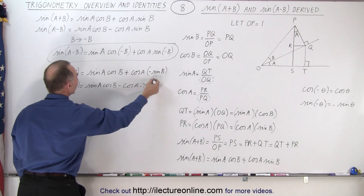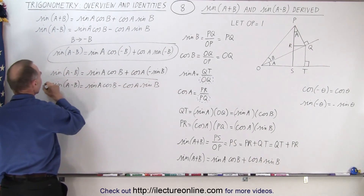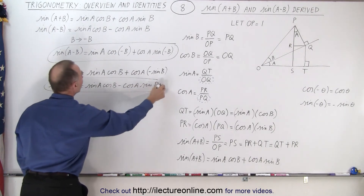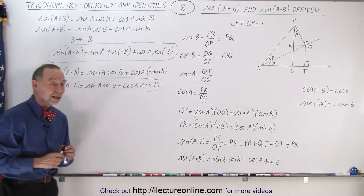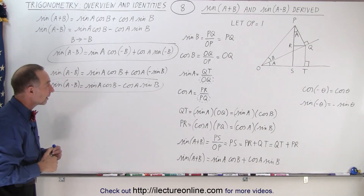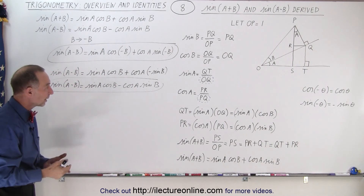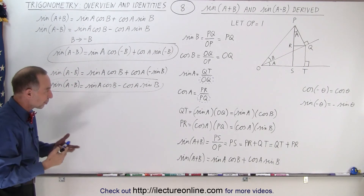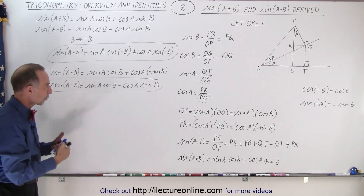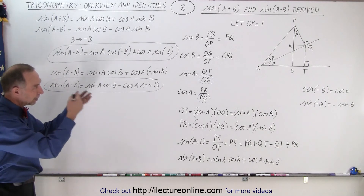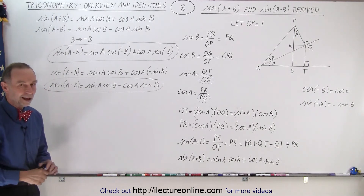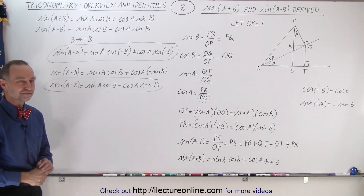And that looks exactly like the identity we have. So there you go — that is how you find those two identities. We have now proven that they are correct. You can use them, and this is how that is done.